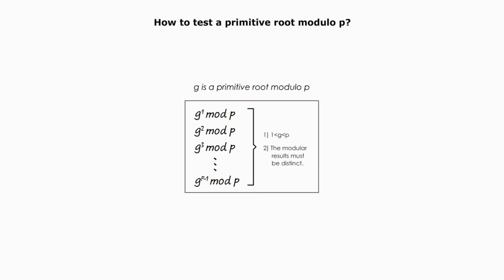The fact that g is a primitive root modular p must satisfy two conditions. One, g bigger than one but less than p. Two, the modular results must be distinct. The first condition is easy to understand.